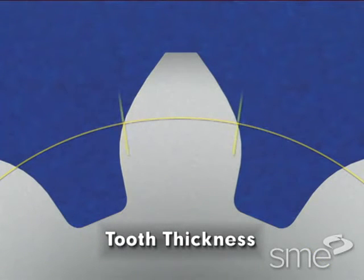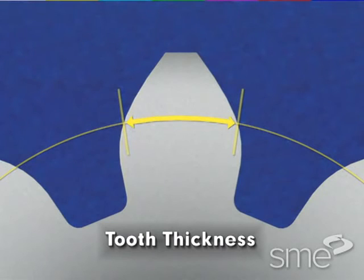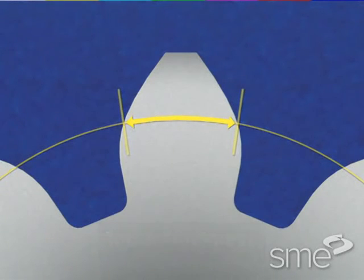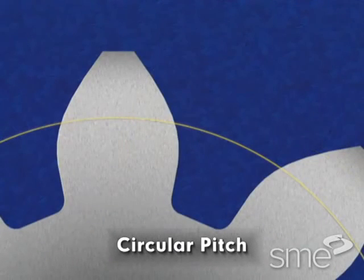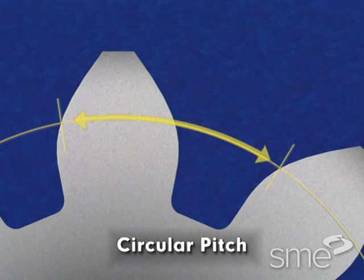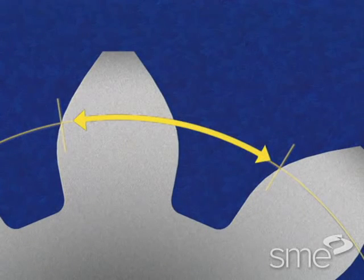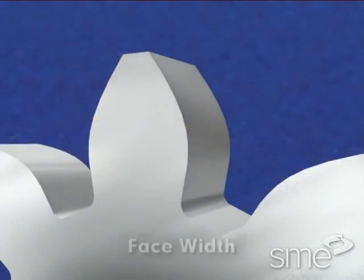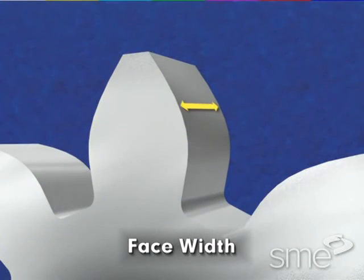Tooth thickness is the thickness of one gear tooth measured along the pitch circle. Circular pitch is the length of the arc along the pitch circle between corresponding points of adjacent gear teeth. Face width is the gear tooth width measured along the axial plane.